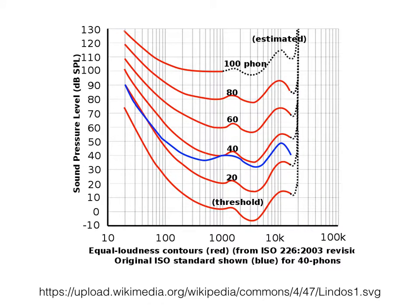We do not perceive sounds evenly over the frequency range. At the same amplitude, we perceive some frequencies as louder than others. We call a graph that shows how our hearing varies over frequency and amplitude a hearing curve. Often these hearing curves are shown as equal loudness contours, meaning how you would have to change a sound in order for it to appear neutral to our ears.